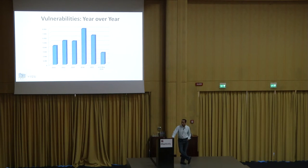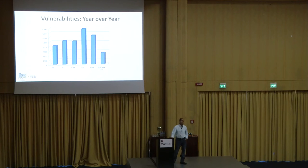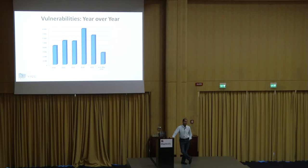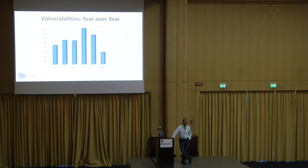This is a quick chart of the number of vulnerabilities over the course of years. These are unique vulnerabilities for commercial software — so these do not include vulnerabilities in custom software or custom web apps. This would include, for example, an Apache vulnerability, a PHP vulnerability, a Word vulnerability, an Adobe vulnerability. It will not include vulnerabilities in custom web applications written by organizations.